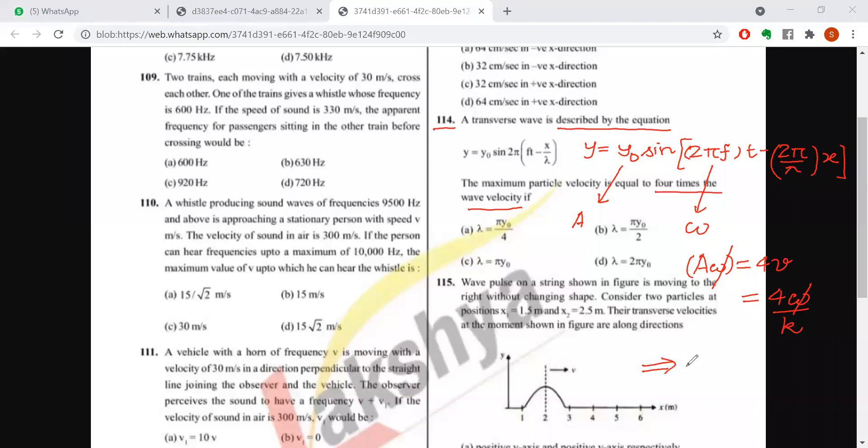Now what is the amplitude? y₀. And what is the value of k? The coefficient of x is k, which is 2π/λ. So 2π/λ goes to the numerator. See how easy this is. So λ = πy₀/2.